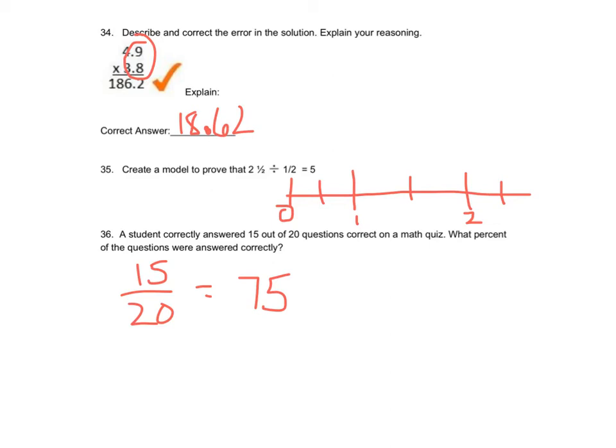With this next one, number 35, I think a number line works well. 2 and 1/2 divided by halves, so that's really saying how many halves are in 2 and 1/2. If we look at that, we can see there's 1 half, 2, 3, 4, 5. That counts the number of halves, and we can also divide that out. There are 5, so there's my model.